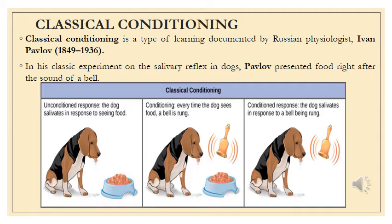In this experiment, Pavlov observed that there was an unconditional response: the dog salivated in response to seeing the food. That was a very simple stimulus-response relationship, and that is also true today — a dog excretes saliva whenever it sees food before it.